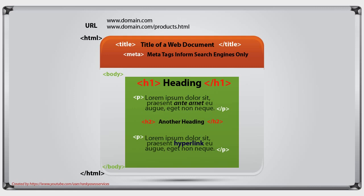HTML documents are very simple to understand. They are made up of a URL, which is your domain or other pages, and then the HTML document — this could just as well be a PDF document, which would have different elements. Our HTML documents have titles, and they have meta tags as well, which are only visible to user agents like Google and Googlebot. All the design elements go within the body element.